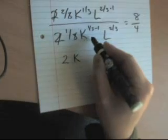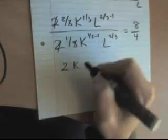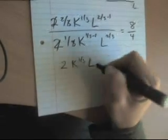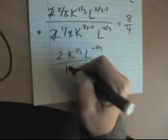So we're left with 2, K to the 1/3, K to the minus 2/3 on the bottom. So K to the 1/3, L to the negative 1/3 on top. Down here we've got K to the minus 2/3, L to the 2/3 is equal to 8 divided by 4 which is 2.